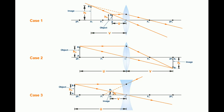In all the three cases, V is the distance of the image from the lens. And the height of the object is placed above the principal axis. H_I — that is, the height of the image.